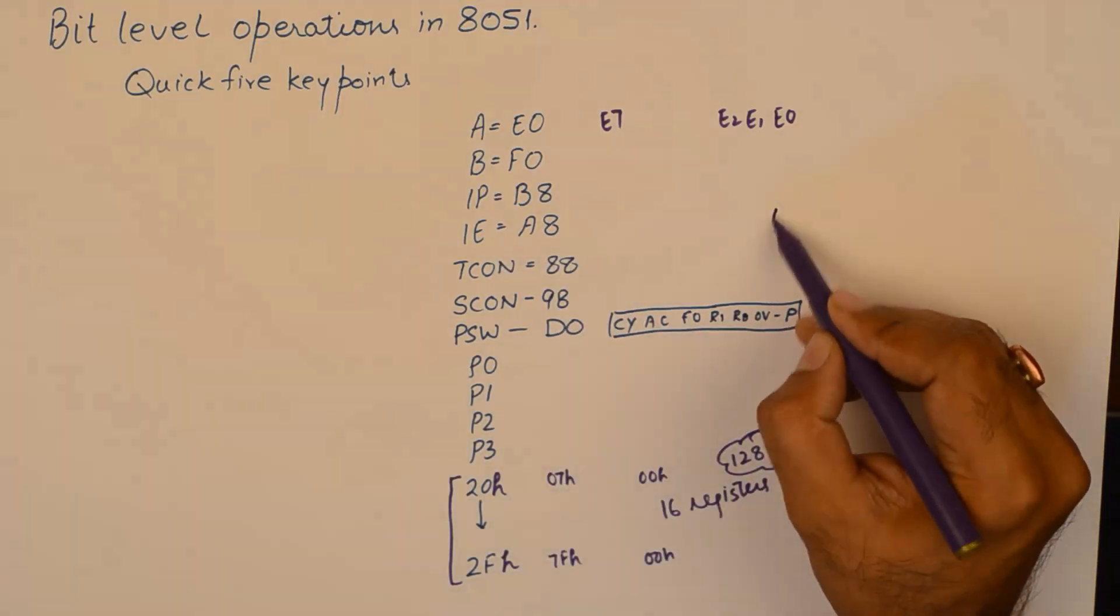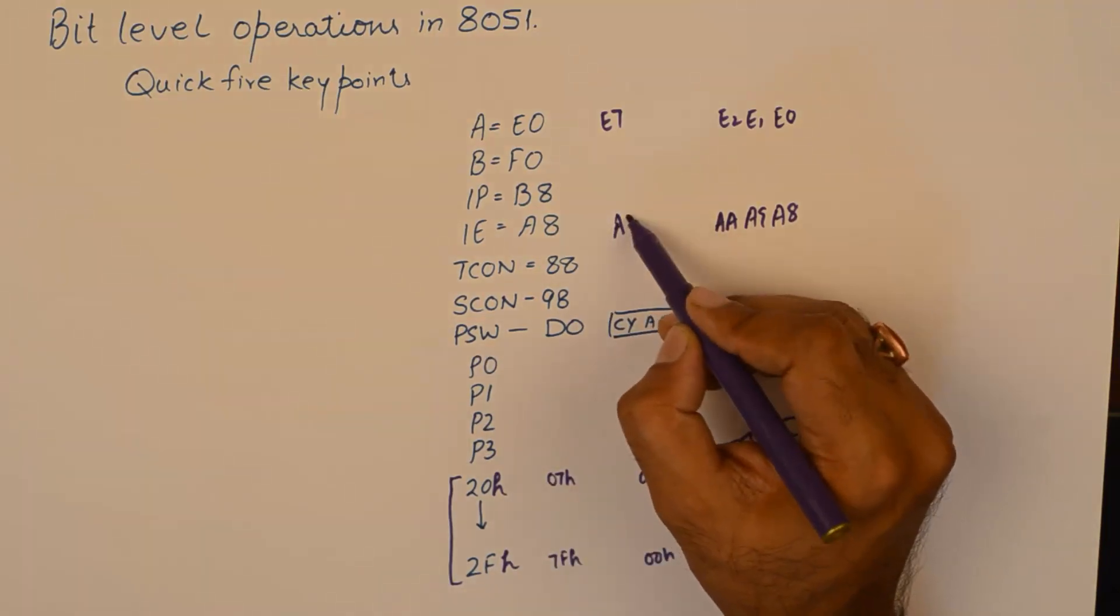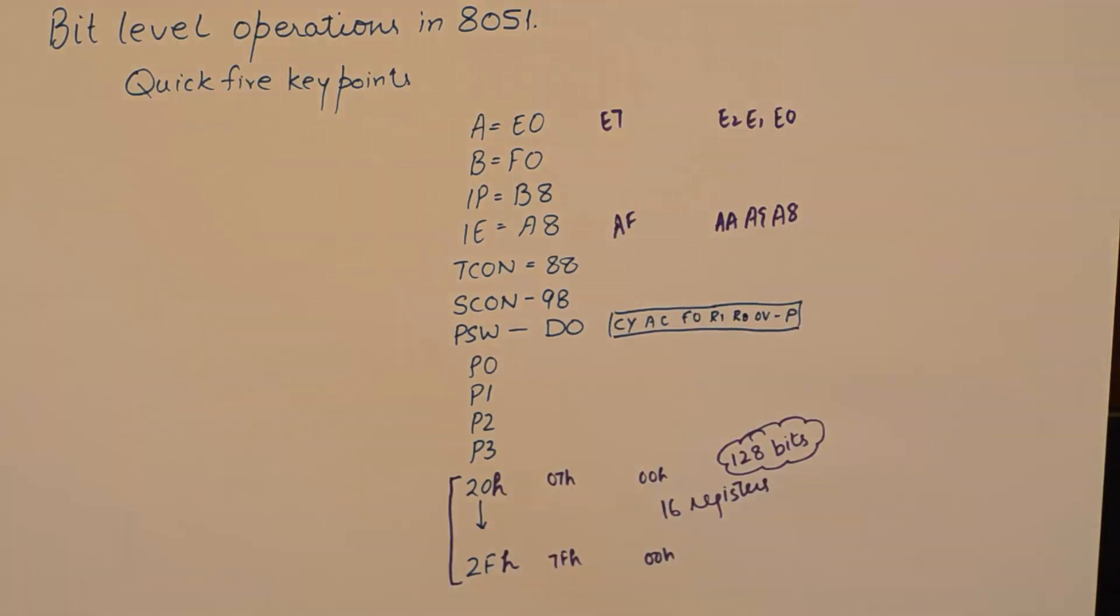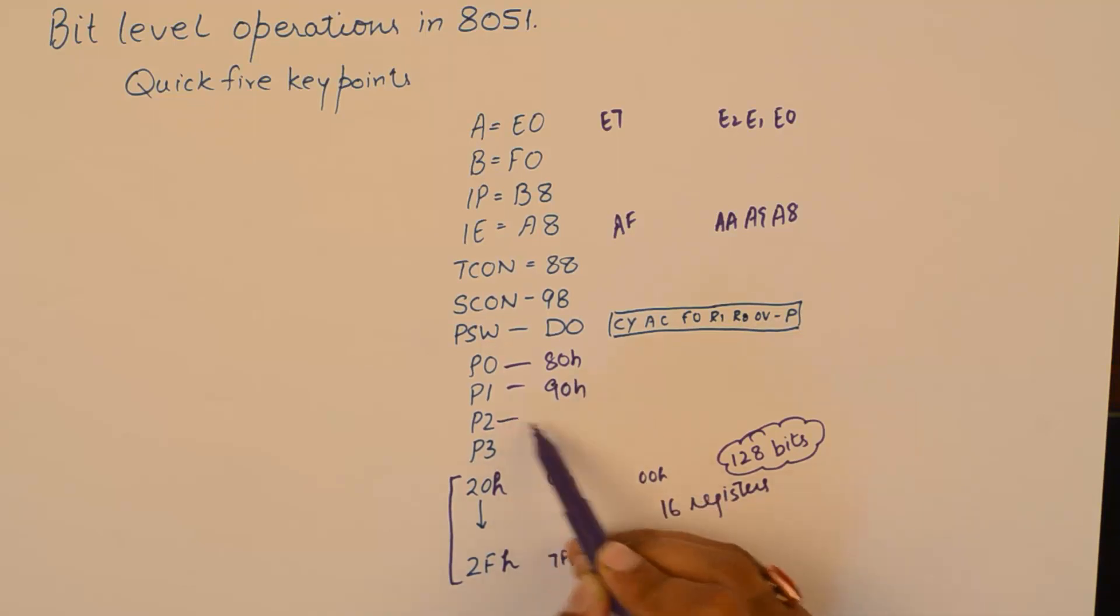As I said in the previous tutorial, if you want to find the bit addresses of IE, they'll start from A8, A9, AA and so on up to AF. And similarly port 0 has 80H, port 1 has 90H, port 2 has A0H, and port 3 has B0H register addresses.